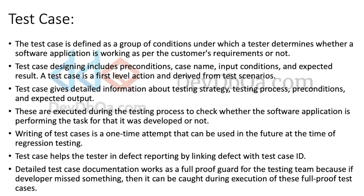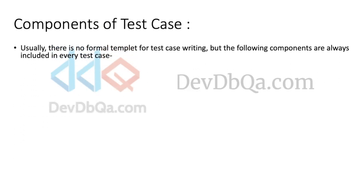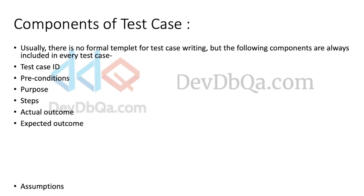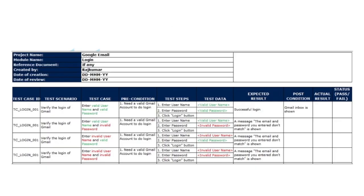A detailed test case document works as a full-proof guard for the testing team — if the developer missed something, it can be caught during execution. The components of a test case are: test case ID, preconditions, purpose, steps, actual outcome, expected outcome, assumptions, product module, product version, revision history, and post conditions.